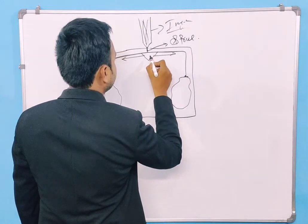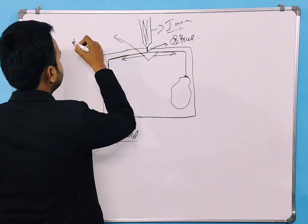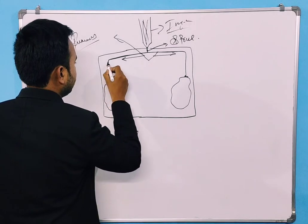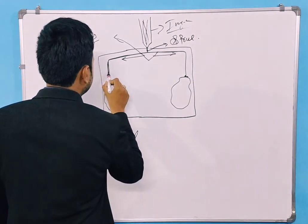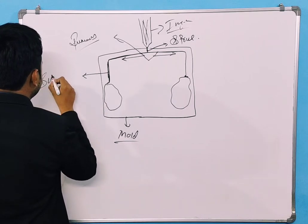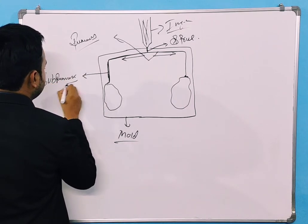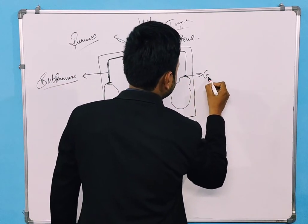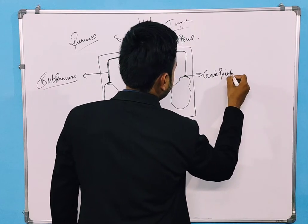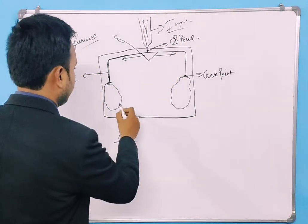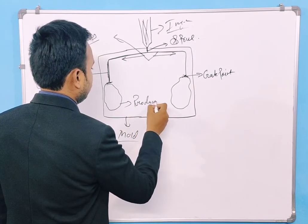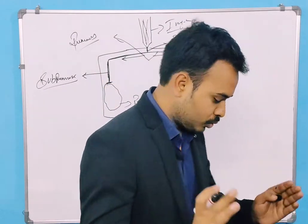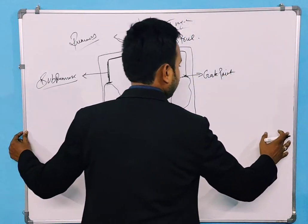The section where the material runs inside your mold is known as runners. Sometimes there is also a subsection known as sub-runners. Finally, the last point in the feed system is called the gate point. After the gate point, the product is formed.